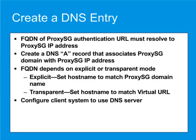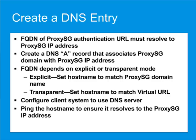Configure the client systems to use the DNS server where you created the A records for the ProxySG. From a client system, ping the host name specified in the A record to ensure that it resolves to the IP address of the ProxySG.